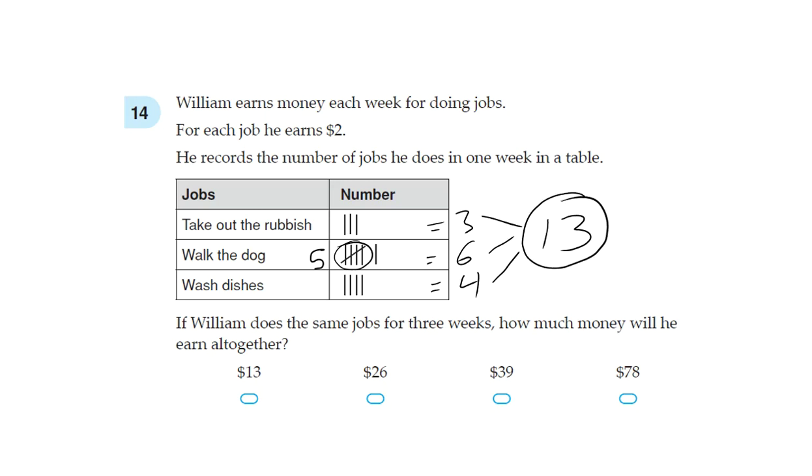If William does the same jobs for 3 weeks, how much money does he earn? So 13 jobs and each job he earns $2. 13 times 2 is 26, and 26 is the amount of money he earns in 1 week.